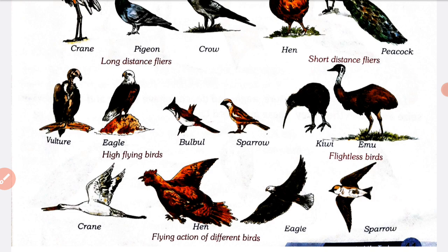Vulture and eagle are the high flying birds - yeh birds aise hain jo ki ground se bahut high, bahut uchaai par ud sakte hain. And bulbul and sparrow are the lower down flyers - yeh birds ground se zyada uchaai par nahin ud sakte, yeh high flying nahin kar sakte. So these are lower down flyers.